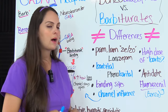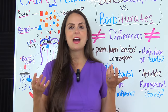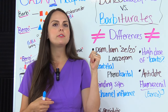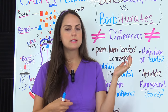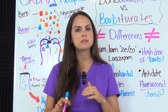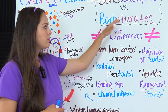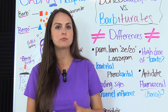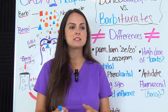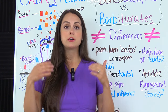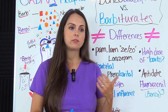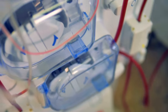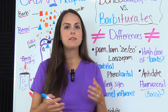Now let's talk about antidotes. Because barbiturates have that small therapeutic threshold, there is a higher risk of overdose. If a barbiturate overdose does occur, there is no antidote to reverse the effects — the patient has to be supported. They will often experience respiratory failure and need mechanical ventilation. Dialysis or activated charcoal can sometimes be used to remove the toxic medication from their blood.